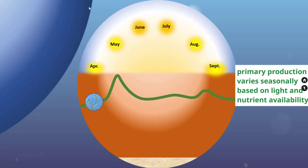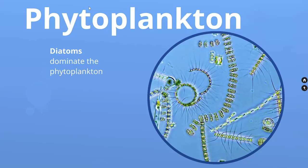The Arctic Ocean experiences 24-hour darkness during the winter, so no primary production can occur. In the spring, light increases and nutrients are plentiful, and the phytoplankton can grow rapidly, producing an abundance of fresh food to support the marine food web — this is what we call the spring bloom. Eventually, the phytoplankton uses up all the nutrients and their growth slows down until ocean mixing brings a new supply. There are many different species and sizes of phytoplankton, but in the cold Arctic, large cells called diatoms that have external skeletons made of silica tend to dominate the phytoplankton community.